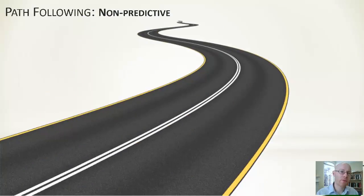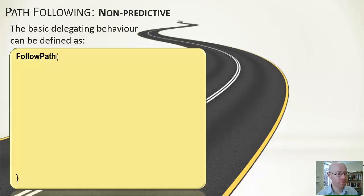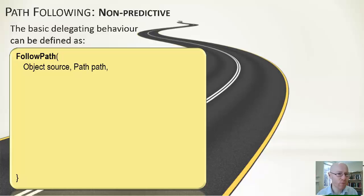I'll show you a couple of algorithms. We'll start with a non-predictive algorithm — one that won't try to take into account velocity or look further ahead. It's simply concerned with where the object is and then picks a point further ahead along the path. The method is called pathFollow, and we're passing in the object that is moving along the path and the path itself. We don't care how the path is defined — we just assume we have a class with a few methods for getting positions.